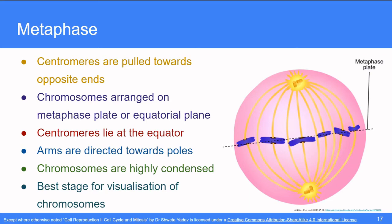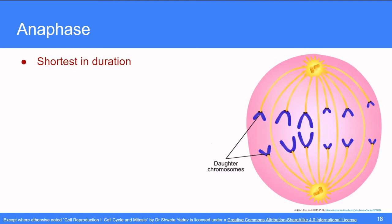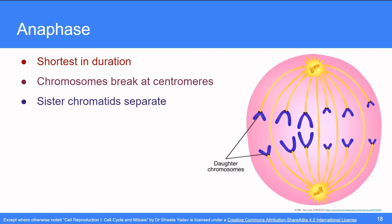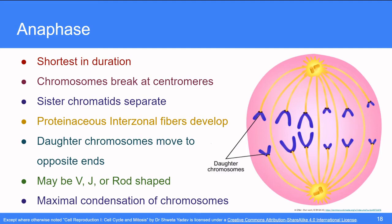Anaphase is the one that follows metaphase. This stage is of the shortest duration. Here, the chromosome breaks at the centromere due to which the sister chromatids separate and become daughter chromosomes. The proteinaceous interzonal fibers develop between the sister chromatids and push them away from each other. The daughter chromosomes move to the opposite ends of the cell. The shape may be V, J or rod shape. Maximum condensation of the chromosome is seen in anaphase. One more important thing to see here is that the chromosome spindle fibers shrink while the continuous and interzonal fibers stretch. This results in the repulsion of sister chromatids as well as the elongation of the cell.